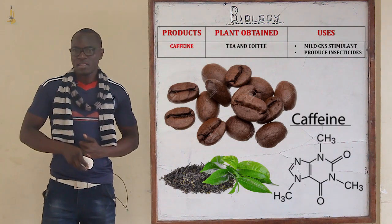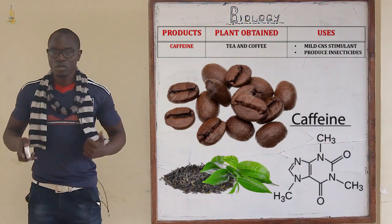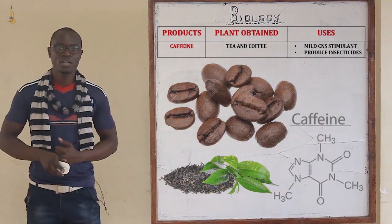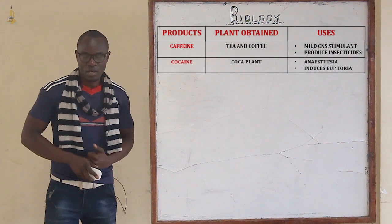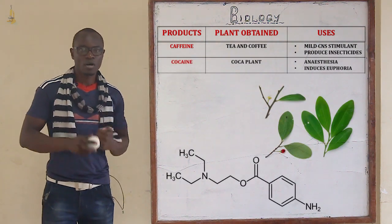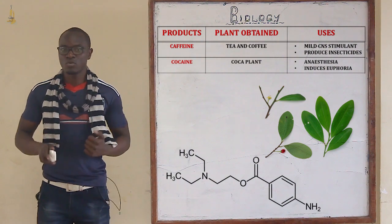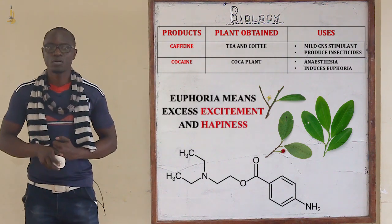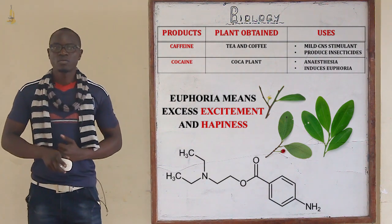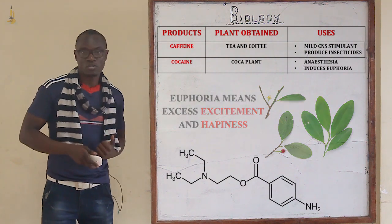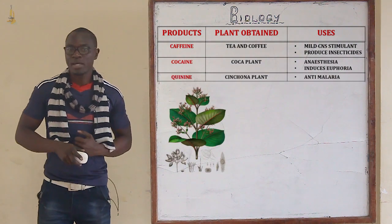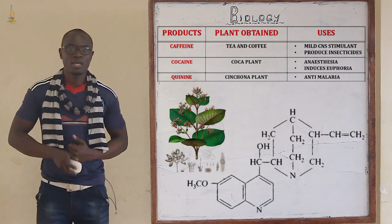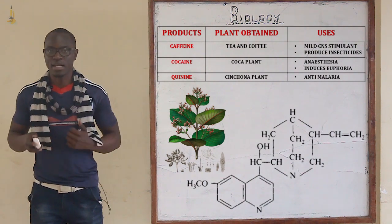Caffeine is obtained from tea and coffee plants. It is used as a mild stimulant and also to produce and manufacture different insecticides. Cocaine is obtained from the coca plant and is used in the manufacture of local anesthesia and also to induce euphoria. Quinine is obtained from the cinchona plant and acts as an anti-malaria drug.